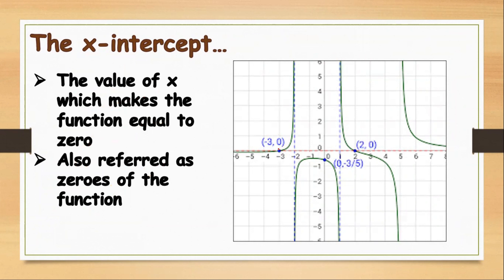So take note: if the graph intersects the x-axis, it is considered the x-intercept. We also call this the zero of the function.